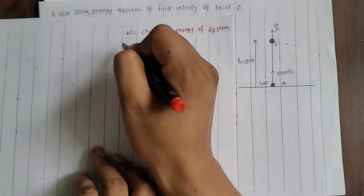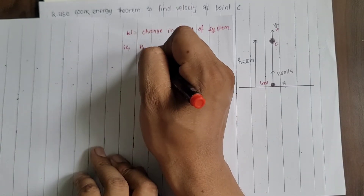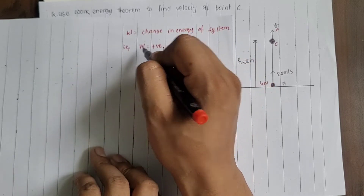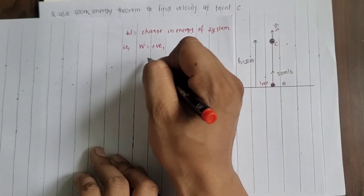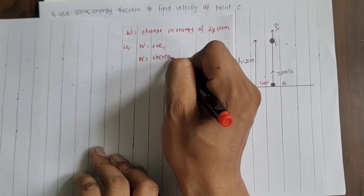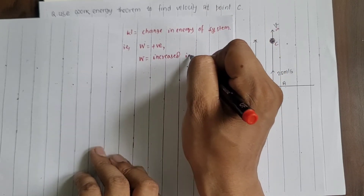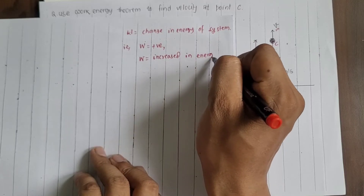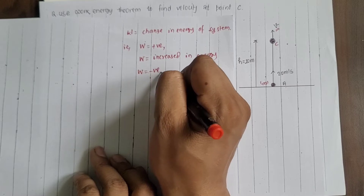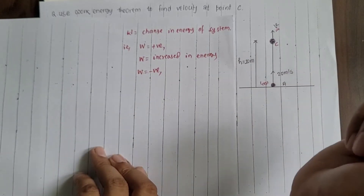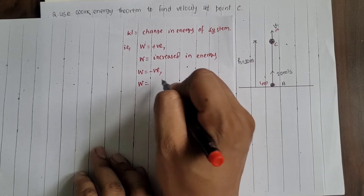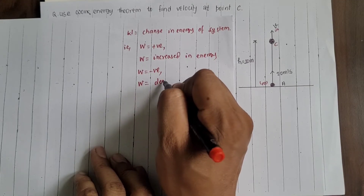That is, when positive work is done on an object, it means the work done increases the energy of the system — work done is always equal to increase in energy. Whereas when work done is negative, the work done decreases the energy of the system — in that condition, work done equals decrease in energy.